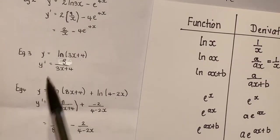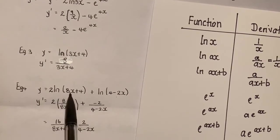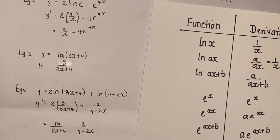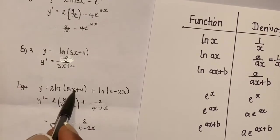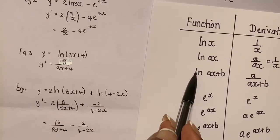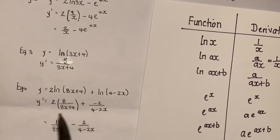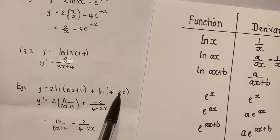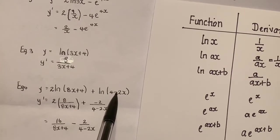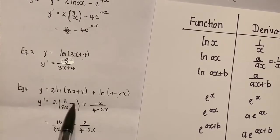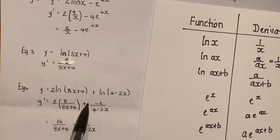For Example 4, y = 2·ln(8x + 4) + ln(4 − 2x). Differentiating ln(8x + 4) following this pattern gives 8 over (8x + 4), where a is 8. On the other side, a is negative 2, so by the same principle it becomes negative 2 over (4 − 2x). When multiplied by the 2 outside, we get 16 over (8x + 4). The plus and minus sign together make it negative, giving negative 2 over (4 − 2x). You are not required to simplify this further.